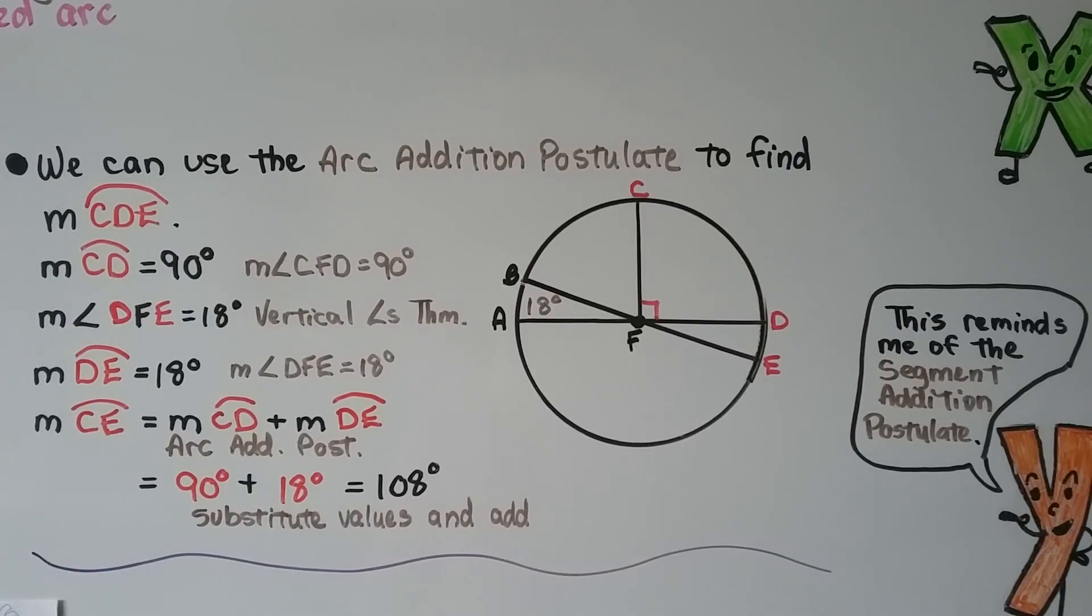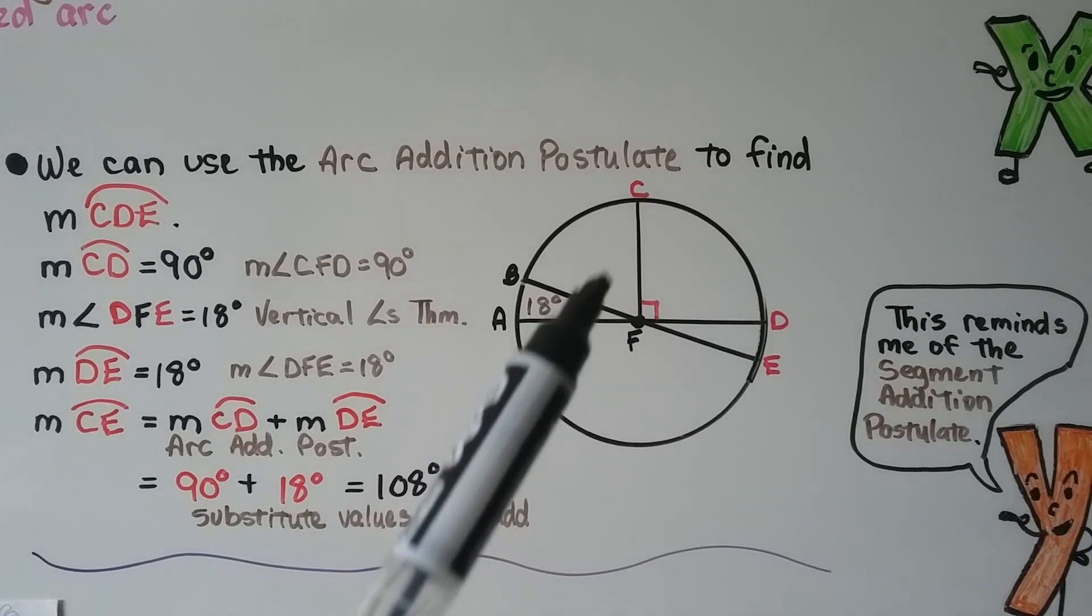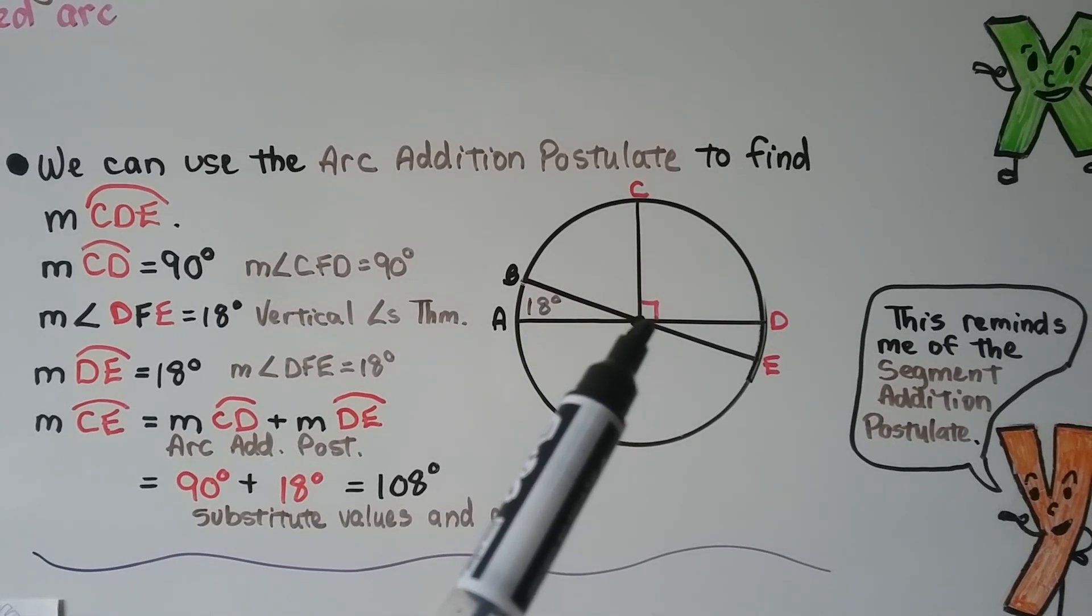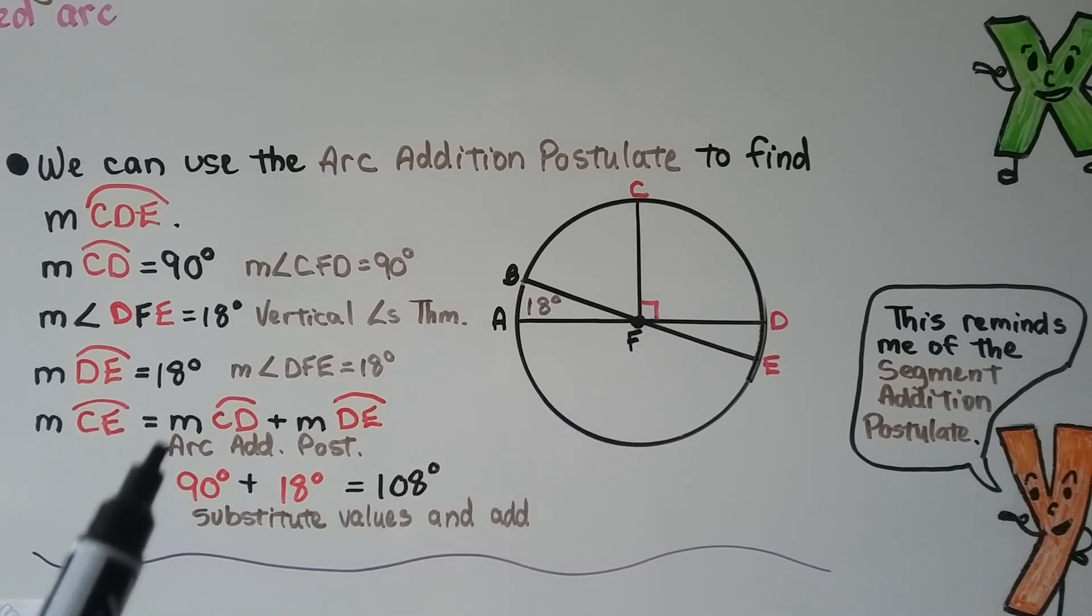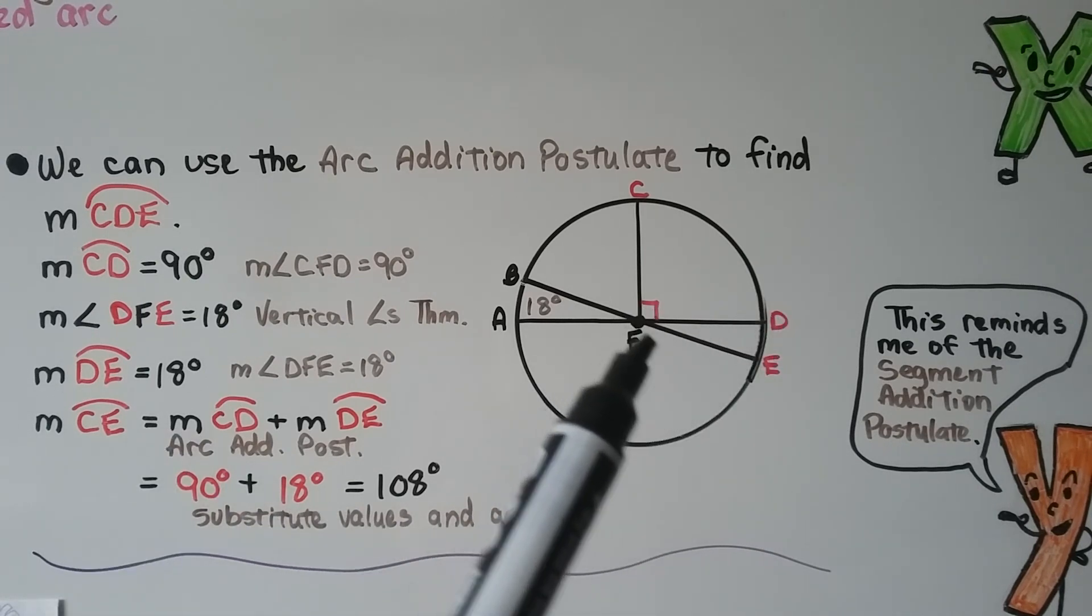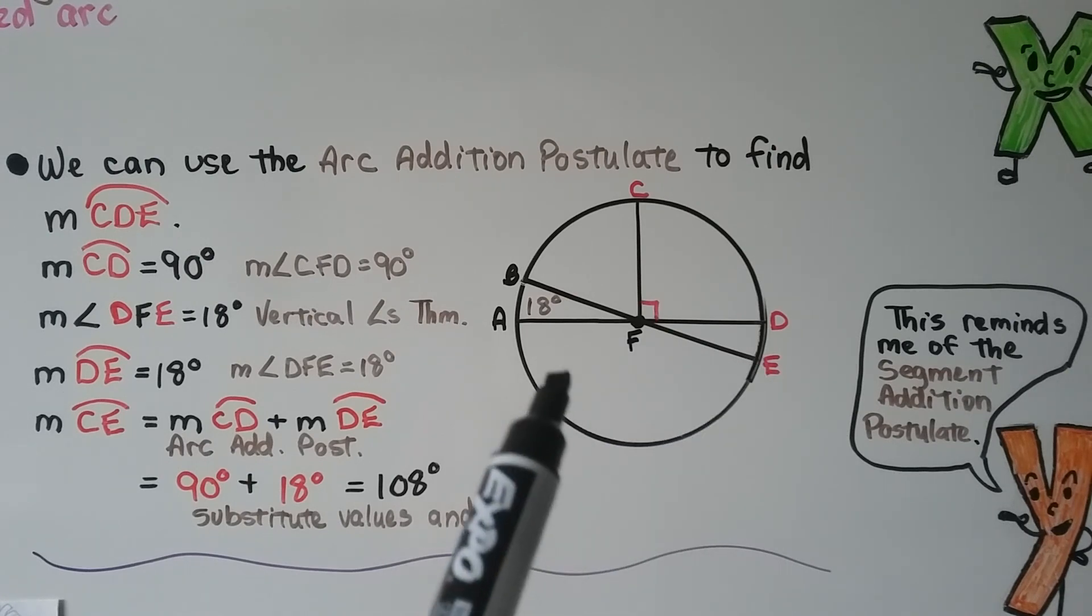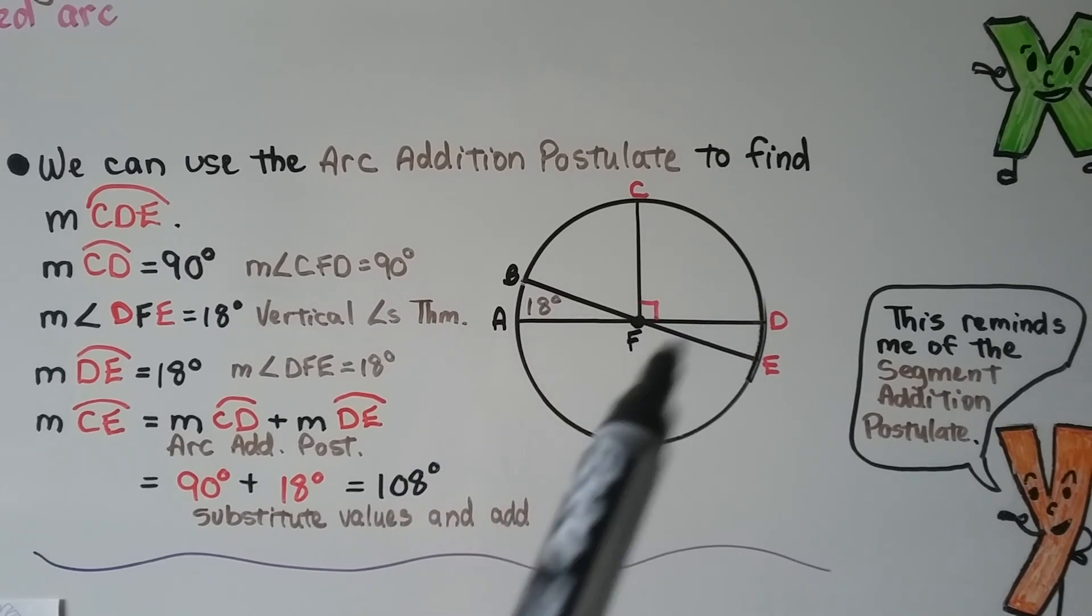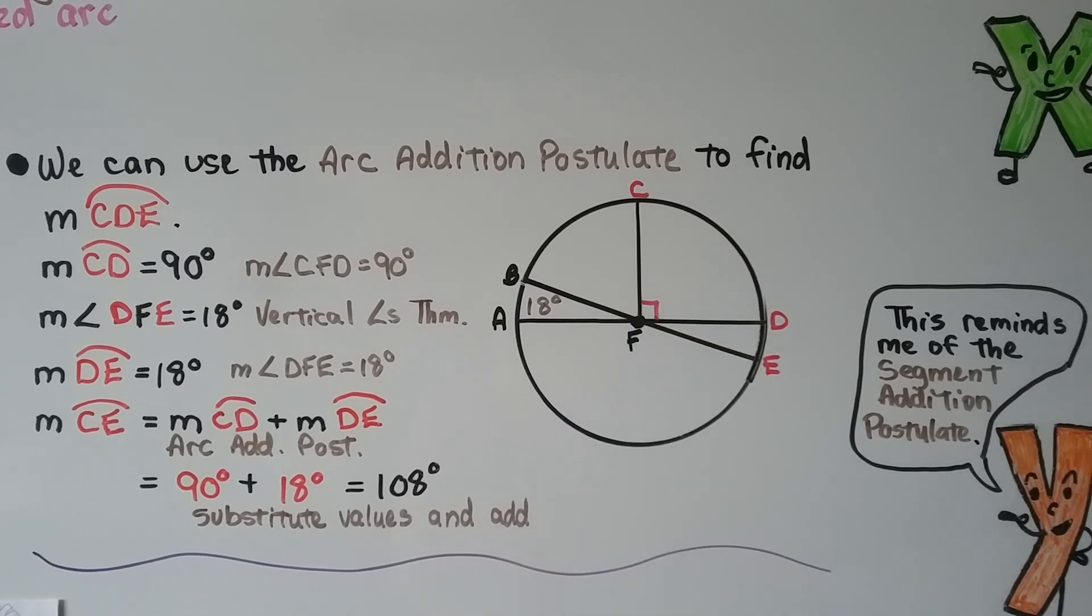We can use the arc addition postulate to find the measure of arc CDE. We have CDE. The measure of arc CD, we can see, is 90 degrees. And the measure of DFE, DFE, is equal to 18 degrees because of the vertical angles theorem. If BFA here is 18 degrees, then DFE must be 18 degrees. And the measure of arc CE is equal to the measure of arc CD plus the measure of arc DE. That's the arc addition postulate. We do the 90 degrees plus the 18 degrees. We know that arc CDE is 108 degrees.